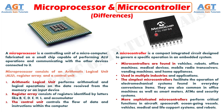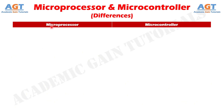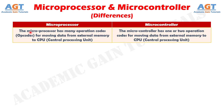Let's look into the main differences between microprocessor and microcontroller. Number 1: The microprocessor has many operation codes for moving data from external memory to CPU or central processing unit, whereas the microcontroller has one or two operation codes for moving data from external memory to CPU.